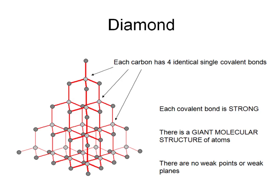Let's concentrate on diamond structure first. Each of these carbon atoms has got four bonds going to four other carbon atoms. These are single covalent bonds, which are very strong. Because these single covalent bonds are very strong, it takes a lot of energy to separate them, which gives diamond a high melting point. It also makes it very hard because it's difficult to break or snap each of these bonds.